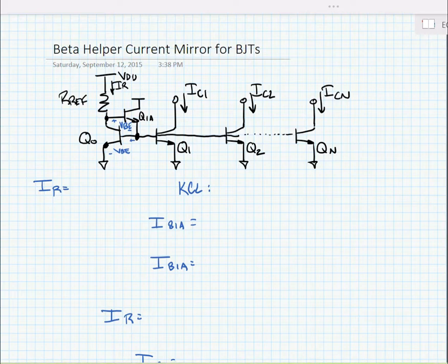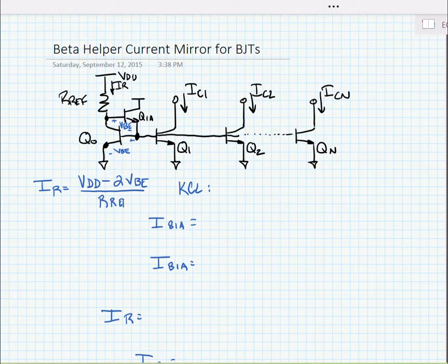With this configuration, we can say that the reference current is equal to VDD minus 2 times VBE divided by RREF. This is because of the stack of the two transistors.